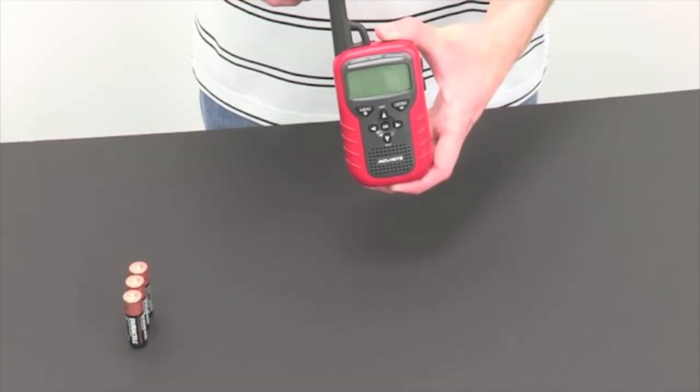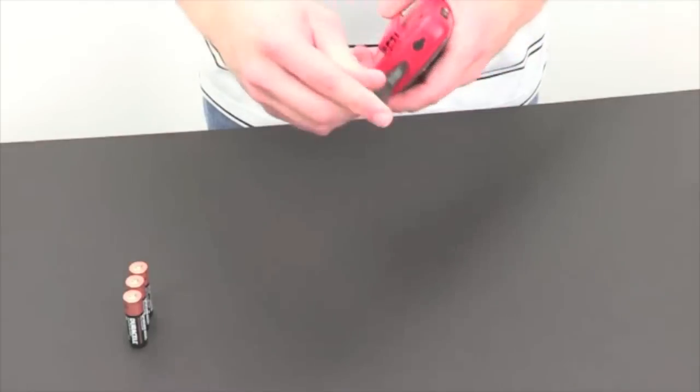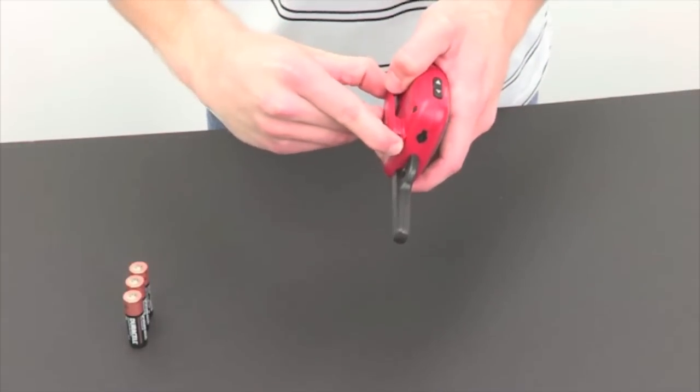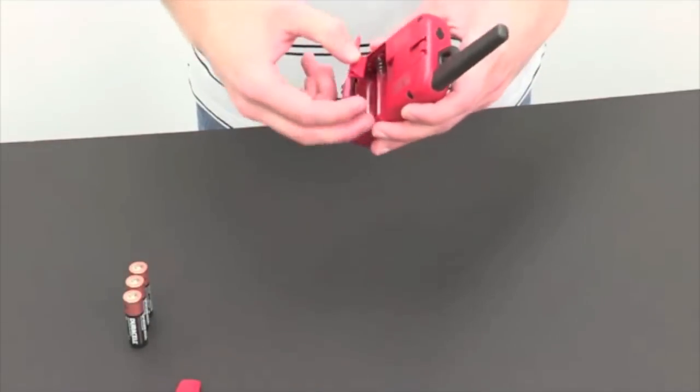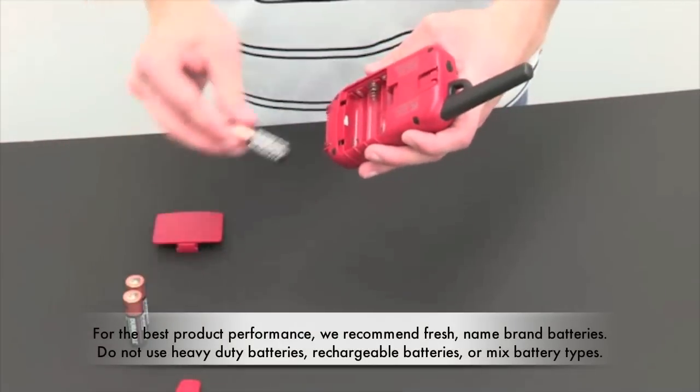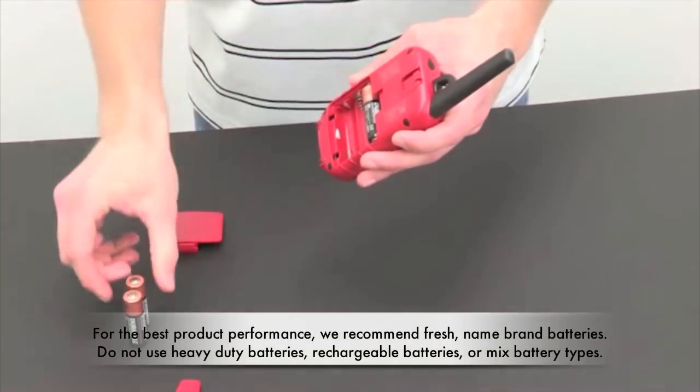To begin the Accurate Weather Alert Radio setup, press down on the small clip and slide the belt clip toward the top of the device. Remove the battery cover and install three AA alkaline batteries following the polarity diagram.